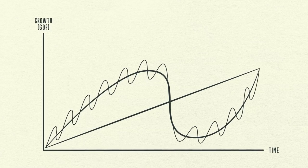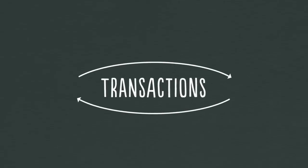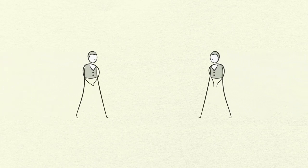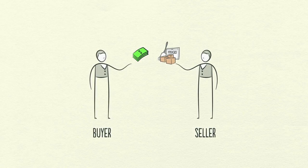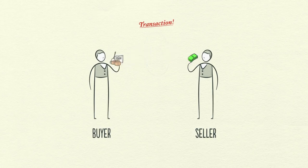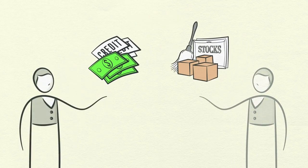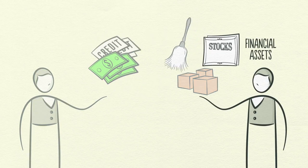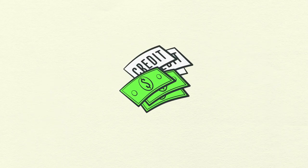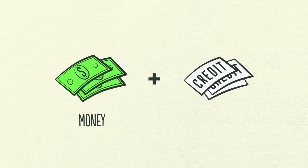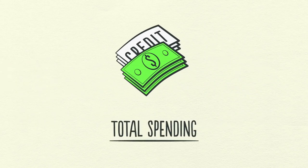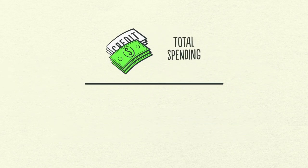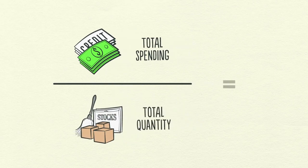Let's start with the simplest part of the economy: transactions. An economy is simply the sum of the transactions that make it up, and a transaction is a very simple thing. Every time you buy something, you create a transaction. Each transaction consists of a buyer exchanging money or credit with a seller for goods, services, or financial assets. Adding together the money spent and the amount of credit spent, you can know the total spending, which drives the economy. If you divide the amount spent by the quantity sold, you get the price.